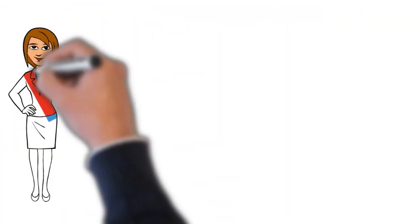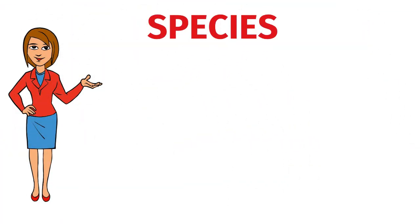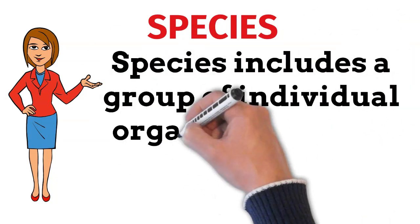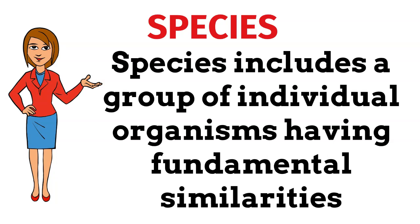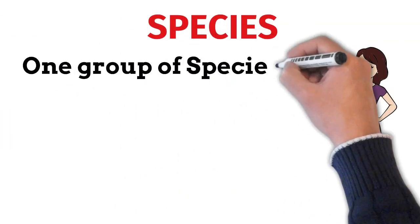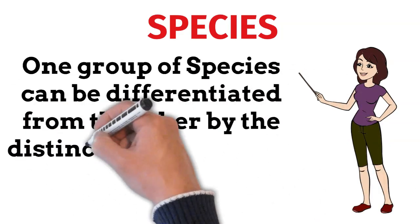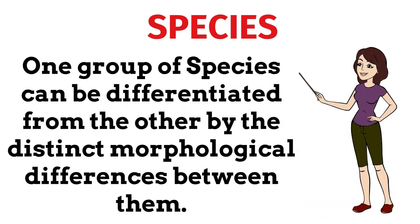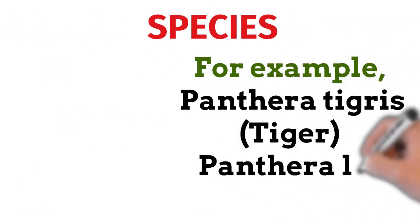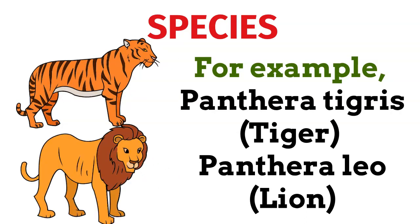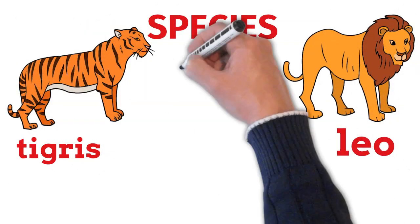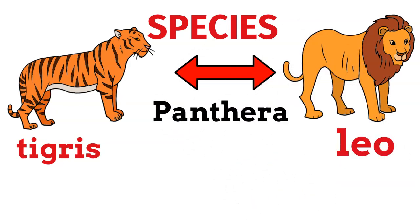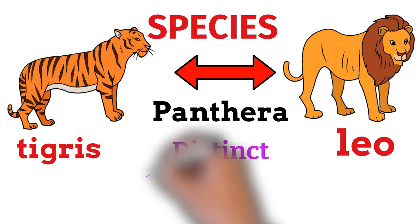First, let's discuss the lowest taxon, that is species. Species includes a group of individual organisms having fundamental similarities. One group of species can be differentiated from the other by distinct morphological differences between them. For example, Panthera tigris (tiger) and Panthera leo (lion) — both the tiger and lion have the same genus Panthera, but their species are different. The tigris species differs from the leo species by some distinct morphological differences.